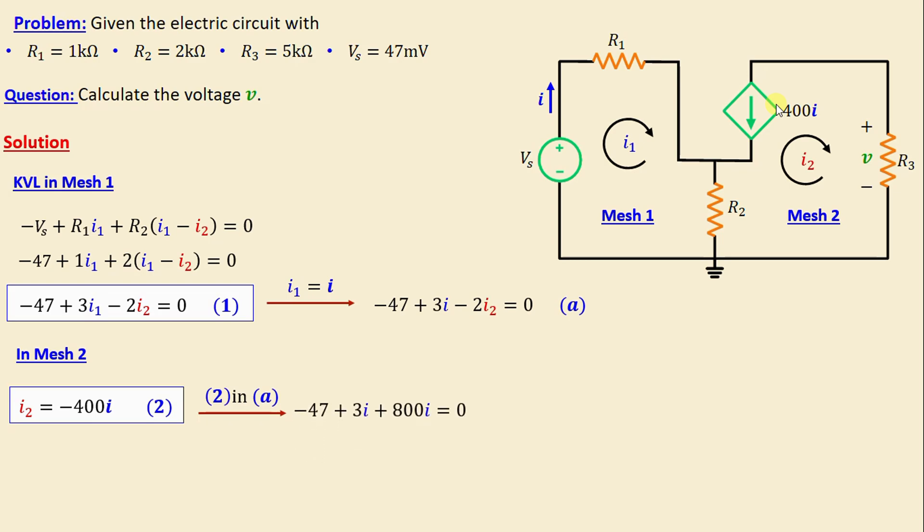If we continue simplifying this equation, we obtain: -47 + 803i = 0. That means i = 47/803, which gives us i = 58.53 nanoamps.